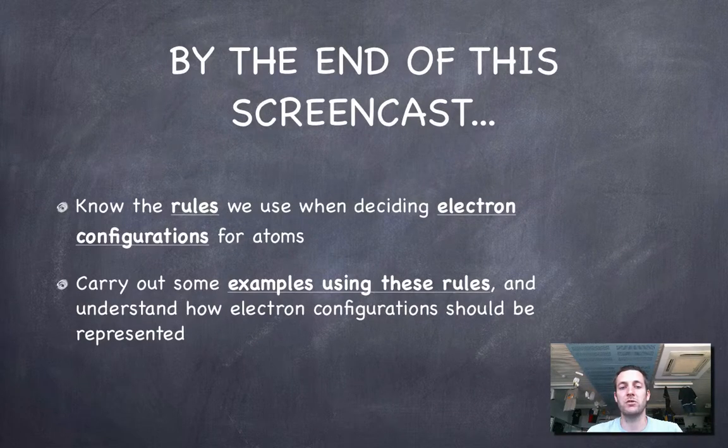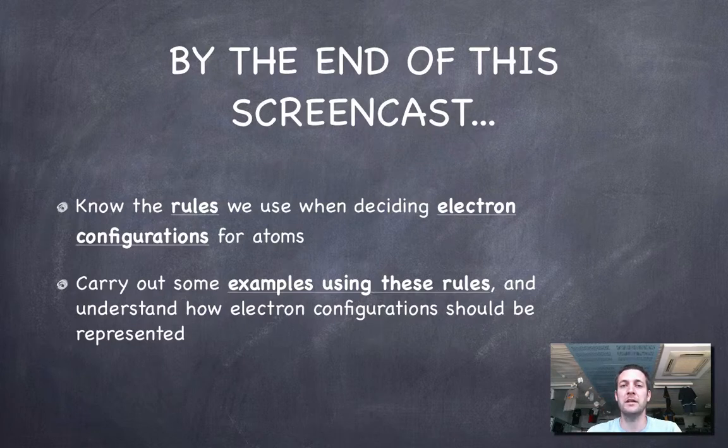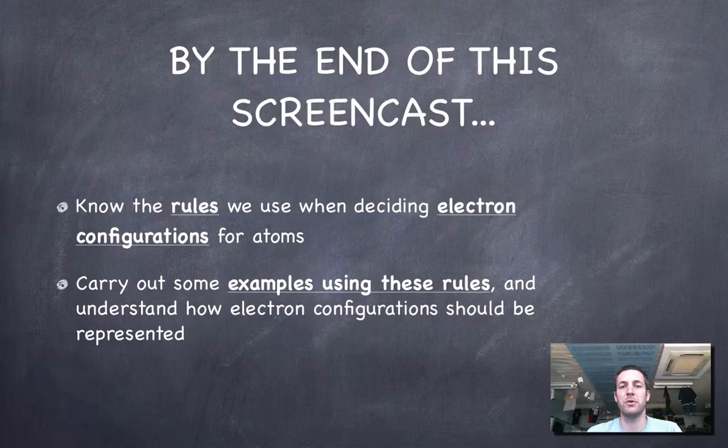That seemed like quite a lot, hopefully it hasn't gone on too long. But hopefully you now know the rules that we use when deciding electron configurations. Remember, you don't need to state the rules, you just need to be able to use them, and you've understood the examples that we've gone through. As usual, if you've got any questions, if there's any confusion, or if you want to make any kind of comment, then feel free to put that on YouTube or to come and see me when you get some time to do that.